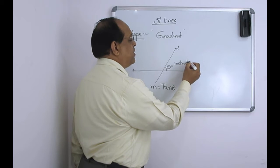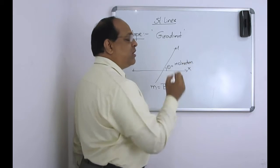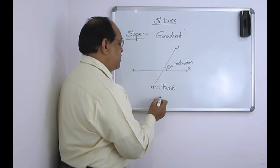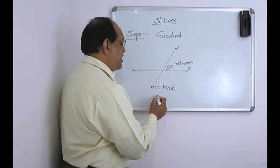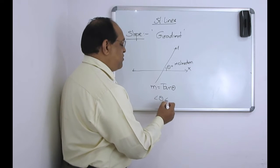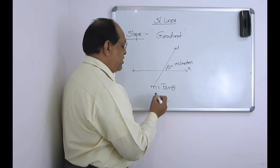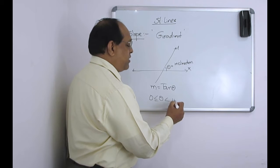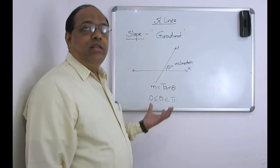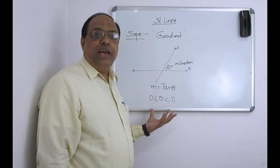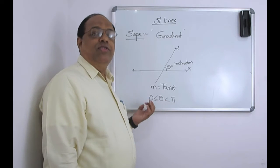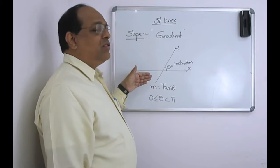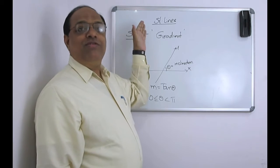Here, theta is called inclination. The range of theta is from 0 to pi. This is about the slope of the straight line.